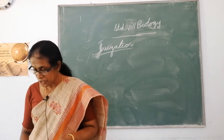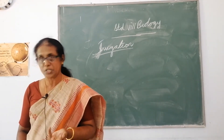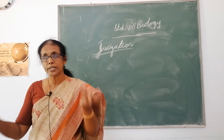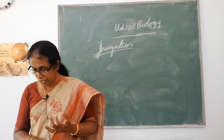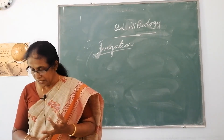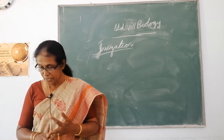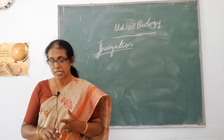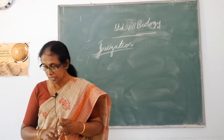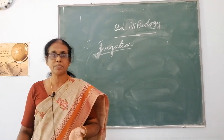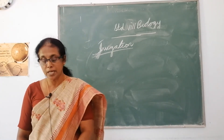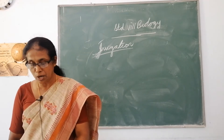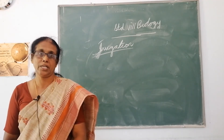The sources of irrigation are where you get the water. You can get water from wells, tube wells, ponds, lakes, rivers, dams, and canals. These are the sources of irrigation.